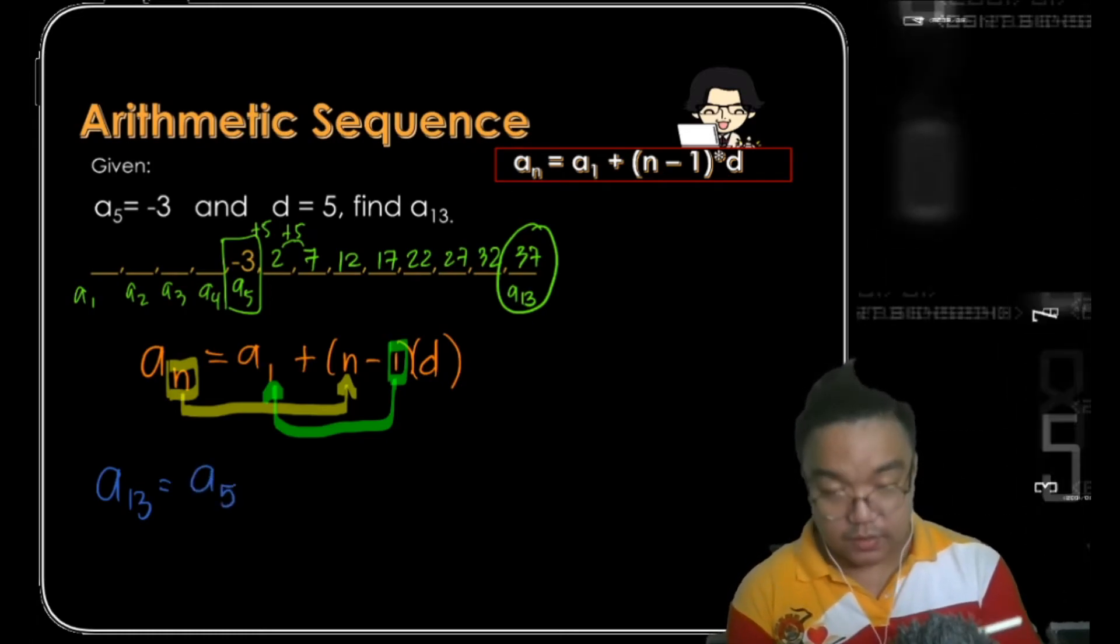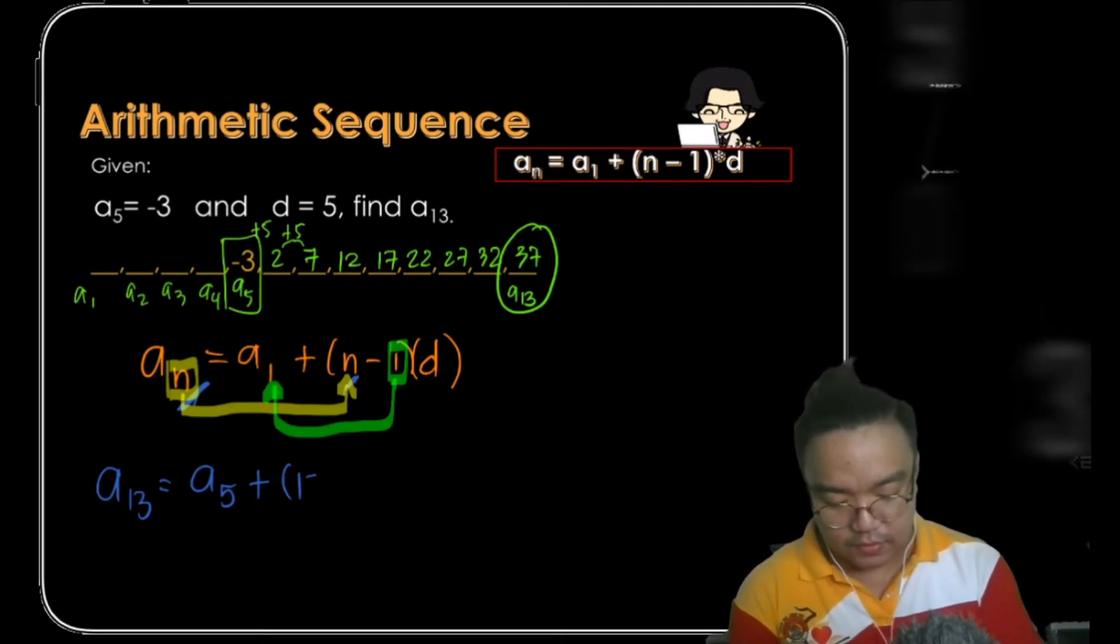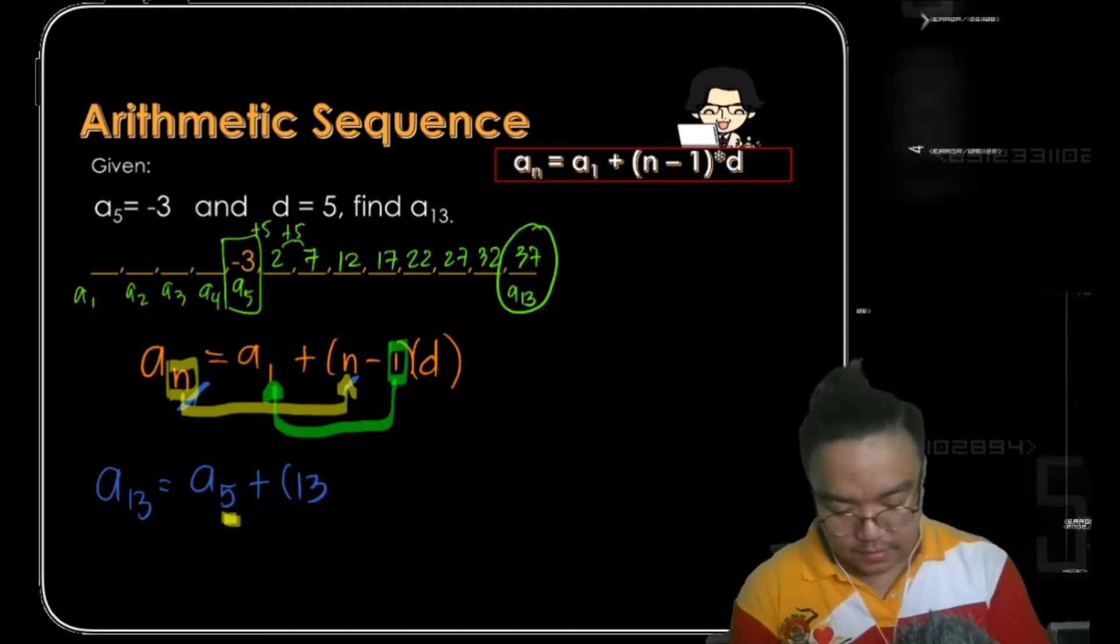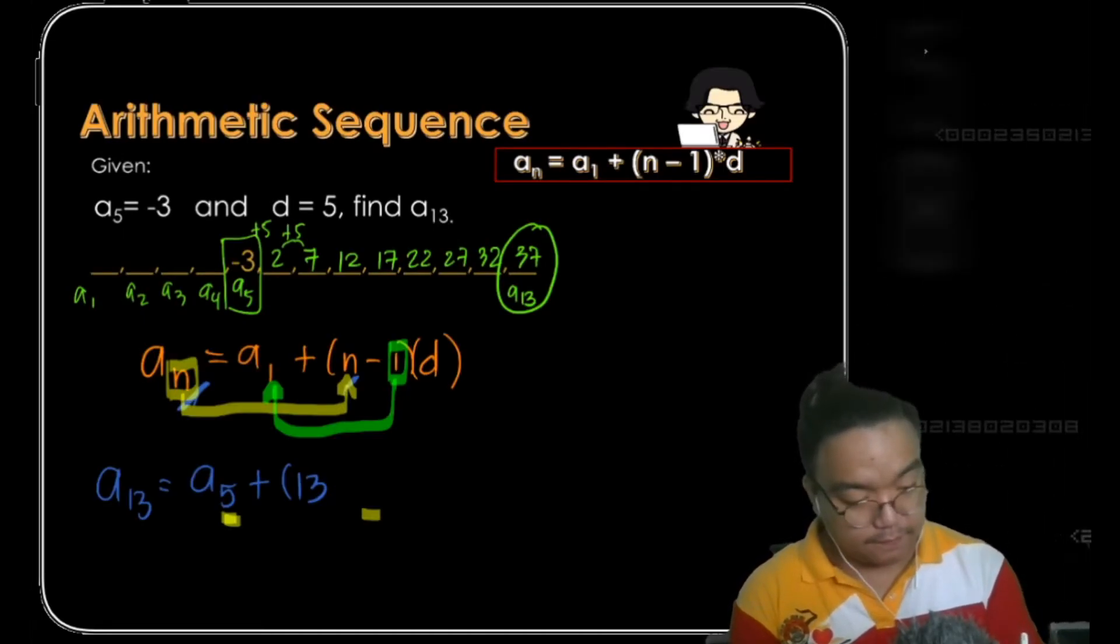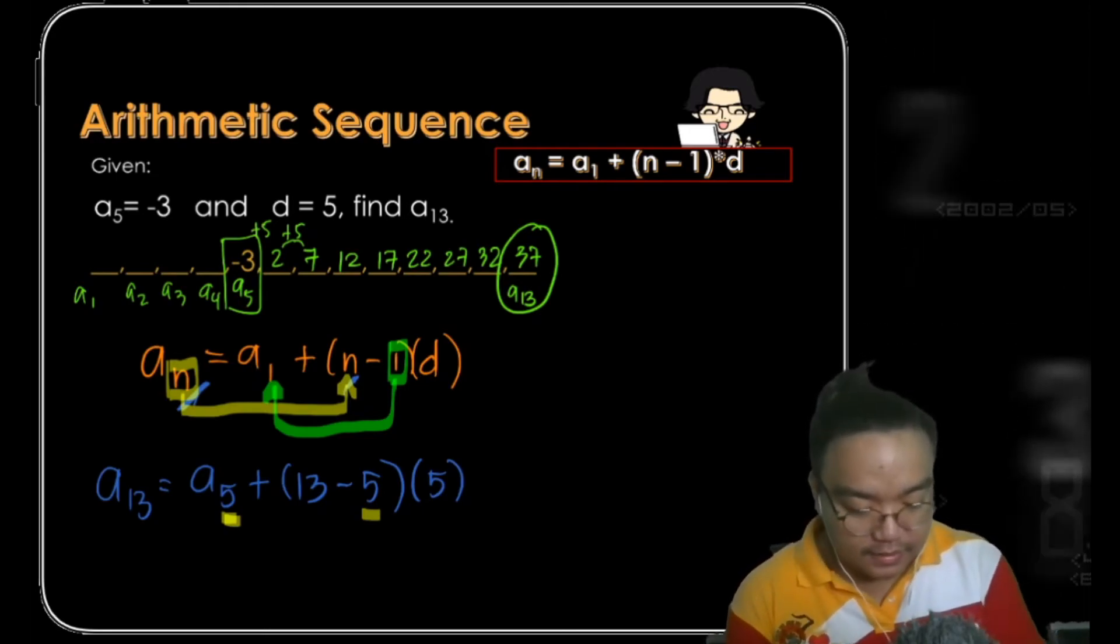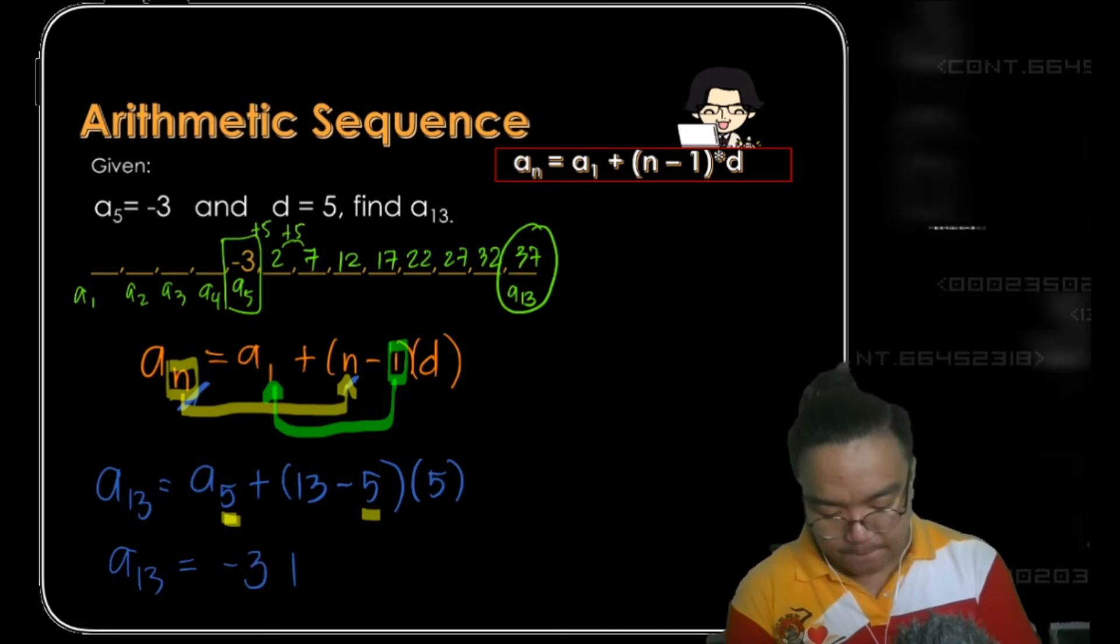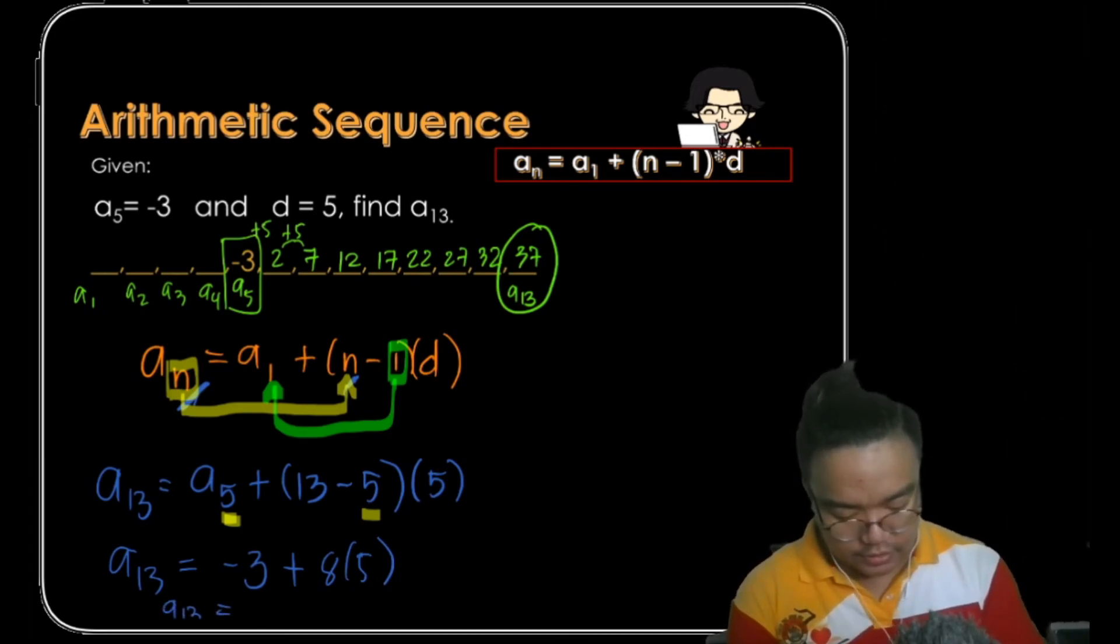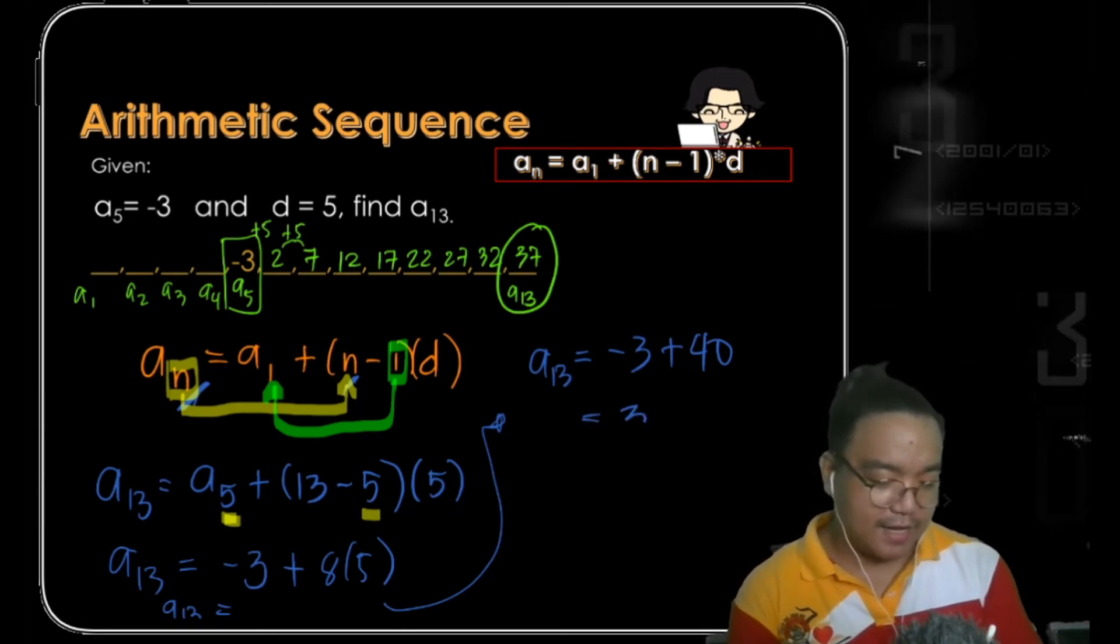We can have a sub 13, which is our 13th term, the one we are looking for. Instead of using a sub 1, we don't have a sub 1, let's use a sub 5 plus, and we all know that the n right here is associated with the n inside the parentheses. So this is 13, but instead of minus 1, since we are using a sub 5, we should be placing here minus 5, and the common difference is positive 5. Let's see if we're going to get the same 37. A sub 13 equals the fifth term, which is negative 3, plus 13 minus 5 is 8, 8 times 5 is 40. So we have a sub 13 equals negative 3 plus 40, and voila, it's 37.